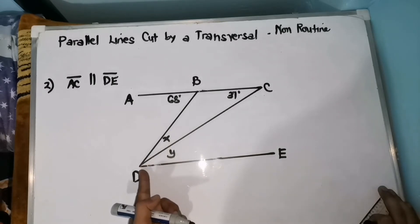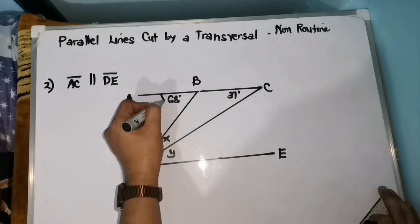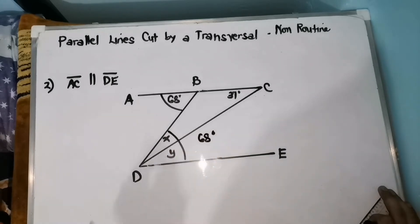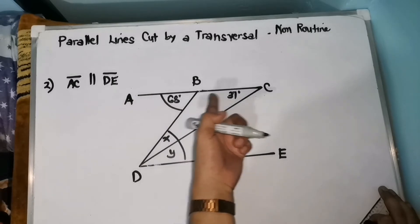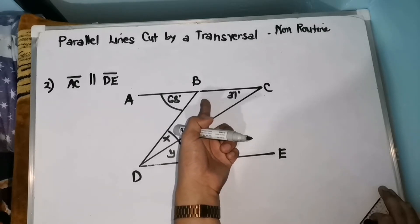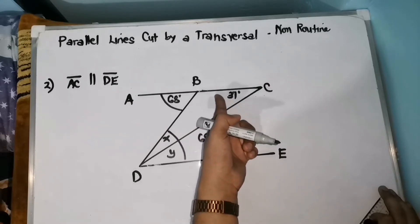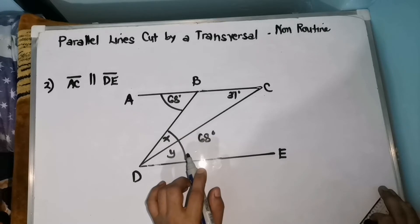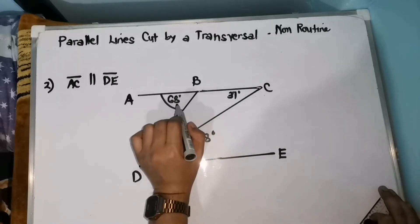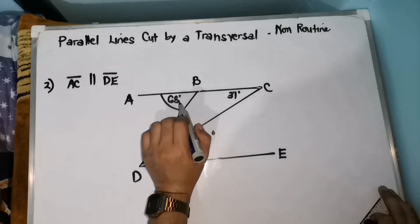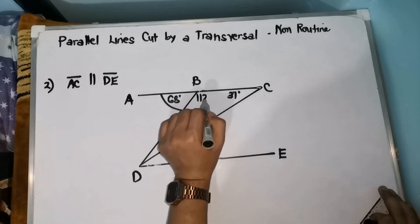Take note: kapag itong BD ang ginamit nating transversal, we can say na itong 68 degrees at itong angle sa kabilang linya ay must be equal to 68 degrees, because they are alternate interior angles. Paano natin ma-solve si X? Since naka-form tayo dito ng triangle, at alam natin na ang interior angles of a given triangle ay merong sum na 180 degrees, kuhanin muna natin itong measurement ng isang angle na ito. Yung itong dalawang angle na magkatabi ay nag-form ng straight angle, so dapat ang measurement niya ay 180 degrees. Para ma-solve natin itong angle na ito, we need to subtract 68 from 180 degrees. So, 180 minus 68, we have 112 degrees.